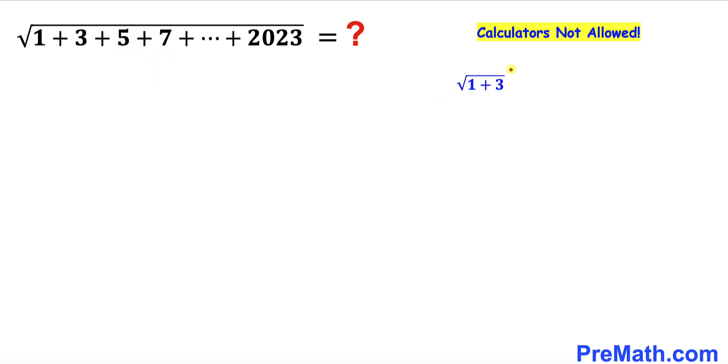Let me give you a simple example: the square root of 1 + 3. In this case, we're going to add these end numbers, 1 + 3, divided by 2. That's going to give us 4 divided by 2, equals 2.